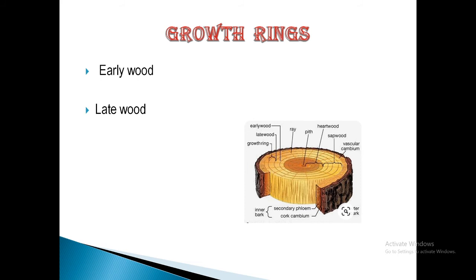The cambium also produces tracheids and wood fibers. The wood that develops in summer or spring season is called spring wood or early wood. The wood formed in winter and autumn season is known as autumn wood or late wood. The line of demarcation is quite conspicuous between the late wood of one year and the early wood of the next year. The annual ring therefore consists of two parts: an inner layer of early wood and an outer layer of late wood.